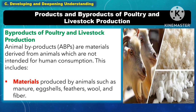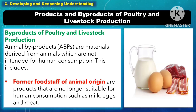Another byproduct of poultry and livestock production is materials produced by animals, such as manure, eggshells, feathers, wool, and fiber. Another byproduct is former foodstuff of animal origin — these are products that are no longer suitable for human consumption, such as milk, eggs, and meat.